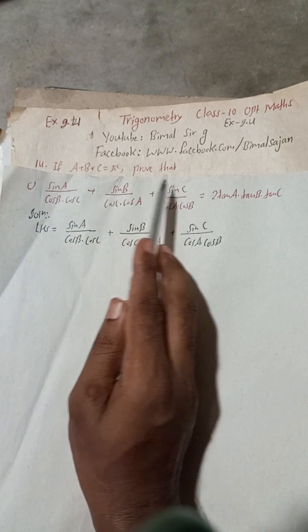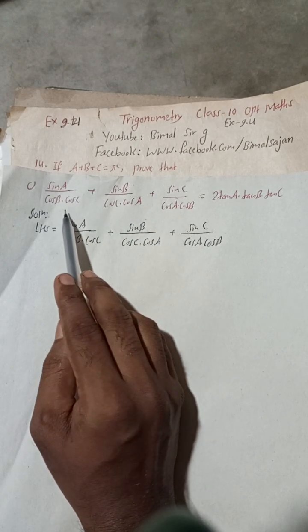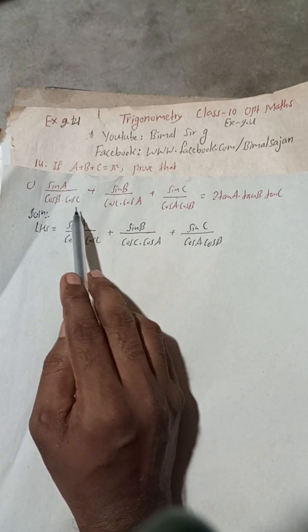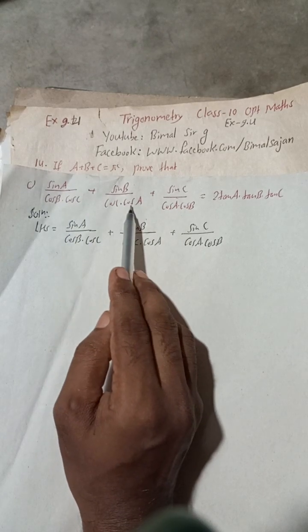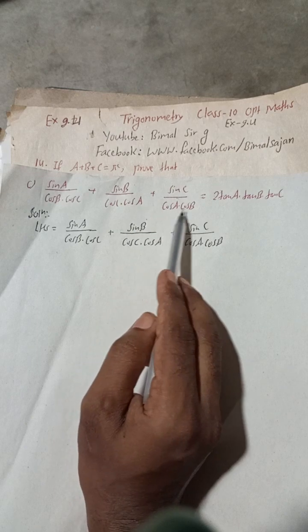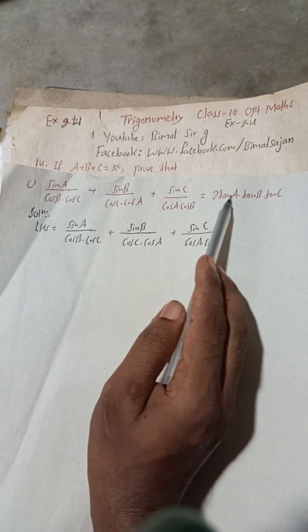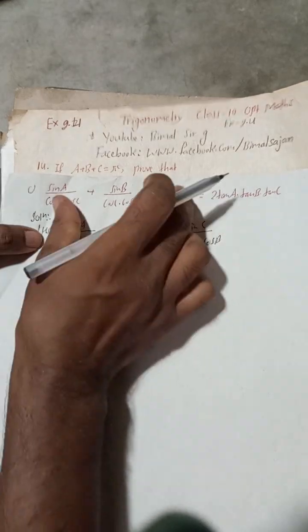Question 14: If A plus B plus C is equal to pi radian, prove that sin A over cos B cos C, plus sin B over cos C cos A, plus sin C over cos A cos B, is equal to tan A tan B tan C.